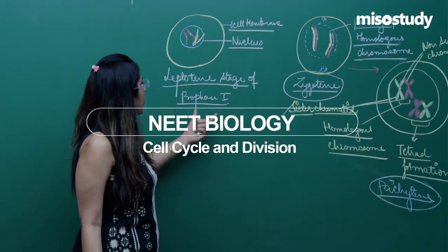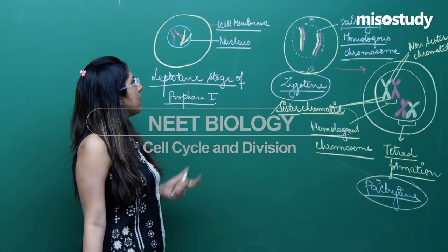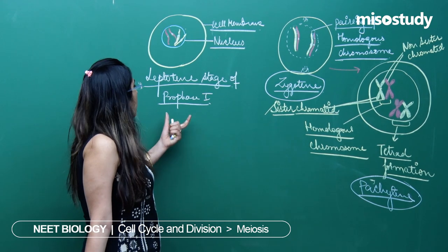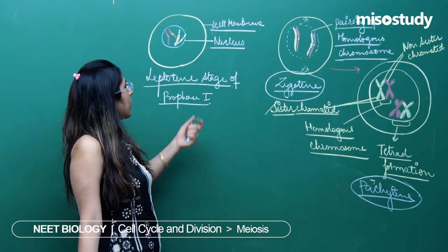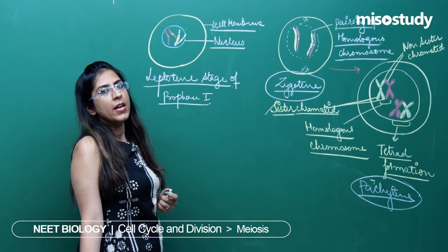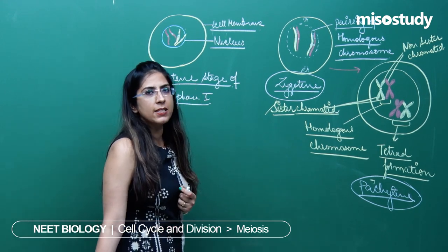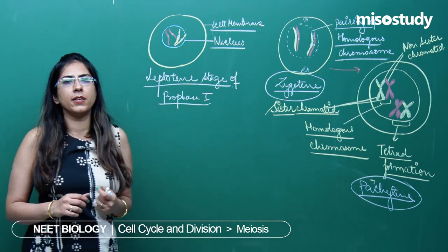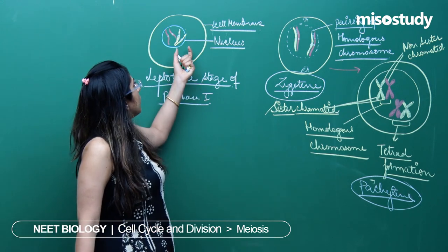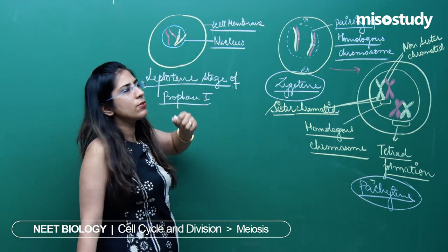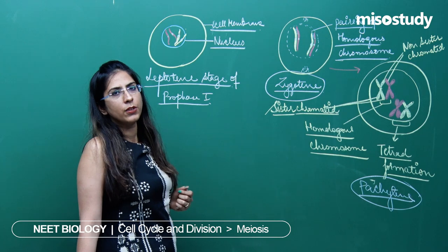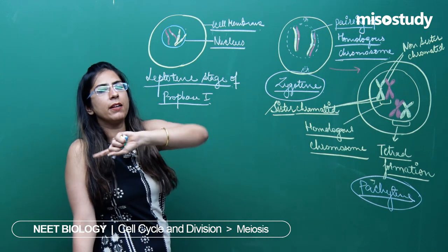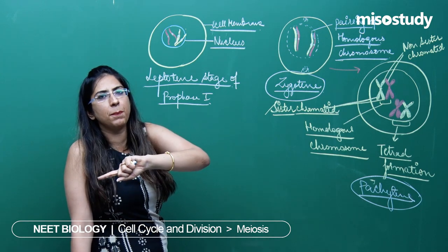The initial stage was considered as prophase I, specifically leptotene. In the leptotene stage, the condensation of the chromatin occurs. This condensation of chromatin leads to the formation of chromosomes, and these chromosomes appear different in the case of plants and different in the case of animal cells.